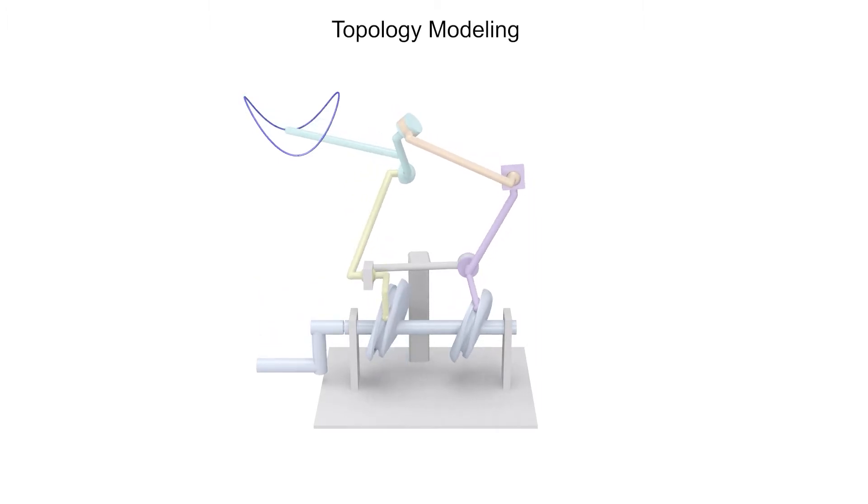Our mechanism is a composition of two cam follower mechanisms and one 5-bar spatial linkage with 3 degrees of freedom. The topology of our 3D cam linkage mechanism is defined by the combination of the 5 link joints.